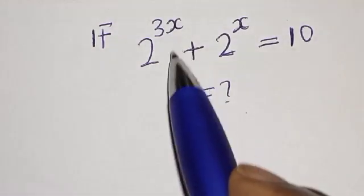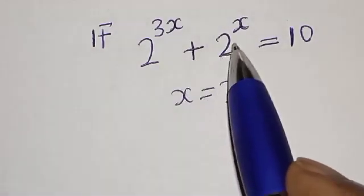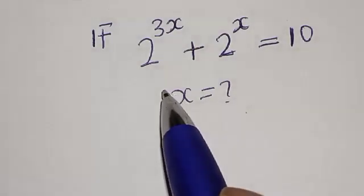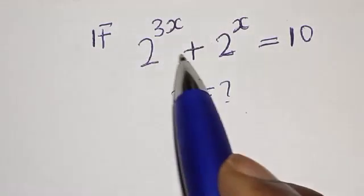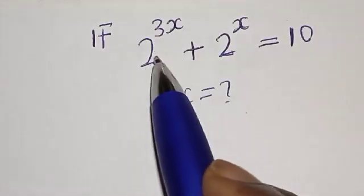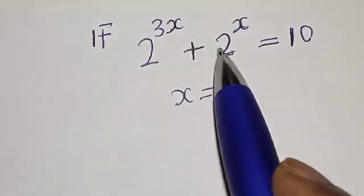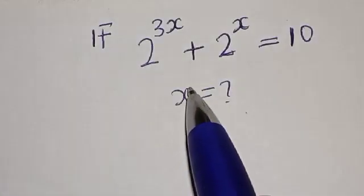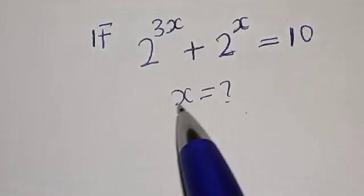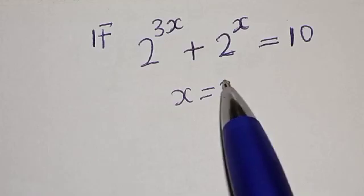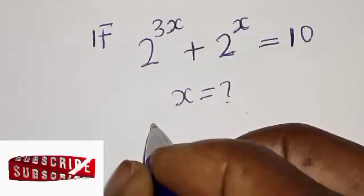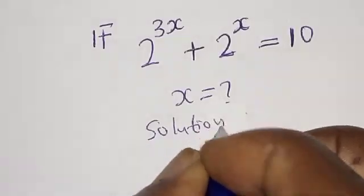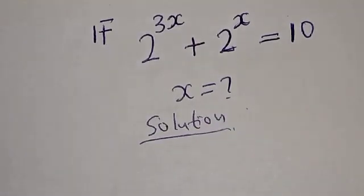If 2 raised to power 3x plus 2 raised to power s is equal to 10, what is the value of s? Hi everyone, welcome to my class. In this class we want to find the value of s from this given equation: 2 raised to power 3x plus 2 raised to power s is equal to 10. Please don't forget to like, share, comment and subscribe.